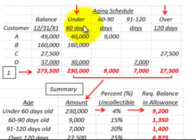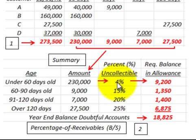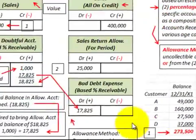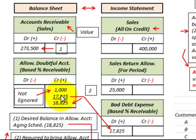To summarize, we determined our bad debt expense based on the aging schedule, calculating the uncollectible percentage for each age category of accounts receivable. Then we recorded our accounts receivable on the balance sheet and set up the allowance contra-account, which reduces accounts receivable based on what we calculated would be uncollectible off that aging schedule. That's how we handle bad debt based on receivables using an aging schedule.